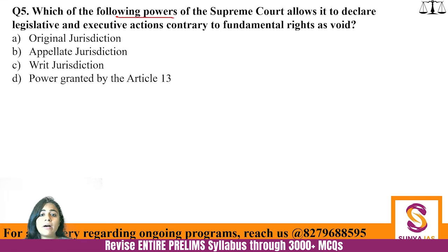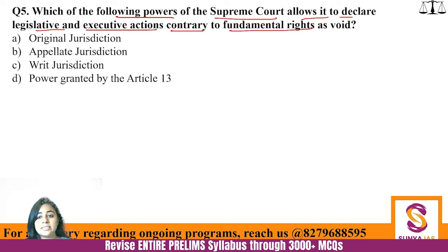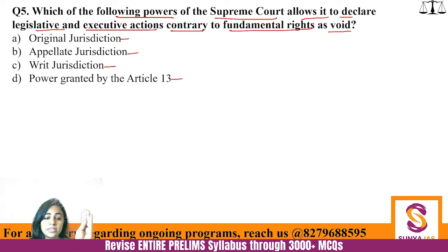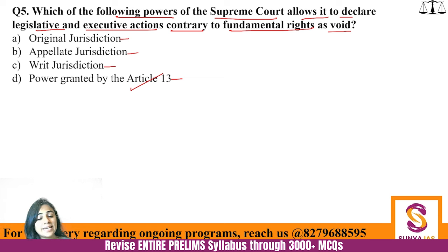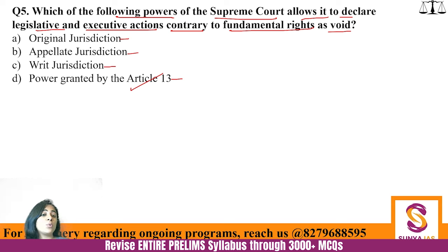Question 5 — Which power allows the Supreme Court to declare legislative and executive actions contrary to fundamental rights as void? Options: original jurisdiction, appellate jurisdiction, writ jurisdiction, or Article 13. Apply common sense — it is Article 13, which clearly says any law violating fundamental rights (Part 3 of the Constitution) is null and void, and the Supreme Court will declare it so. The answer is D.